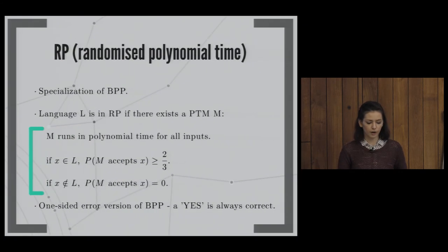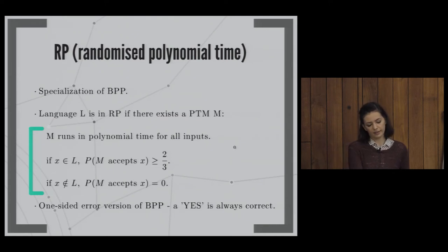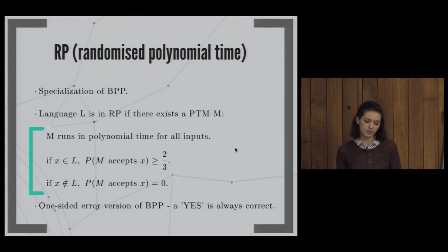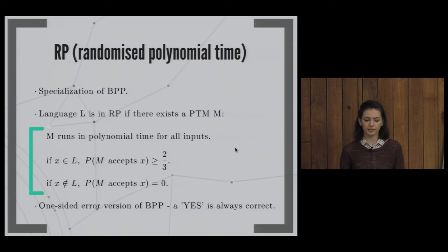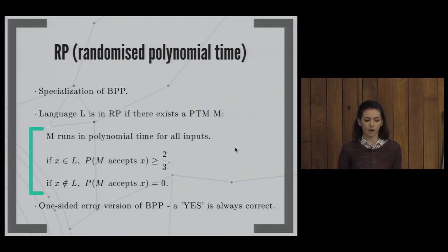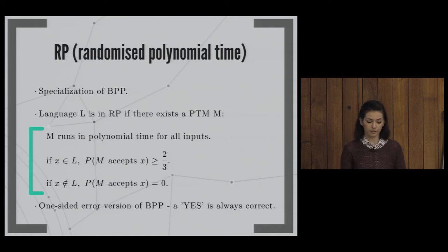RP is a specialization of BPP with one-sided error. If x is in L, the probability of accepting is at least 2/3. If x is not in L, it will never be accepted — so if the machine outputs yes, it is definitely correct. This formalizes what we discussed with Monte Carlo algorithms: BPP was the two-sided error version, and RP is the one-sided error version.